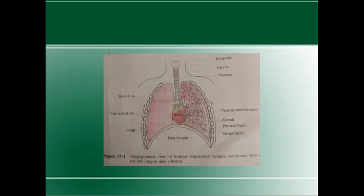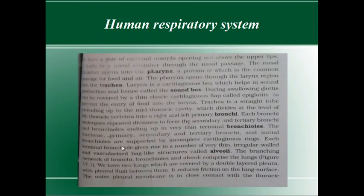The bronchi will end in bronchioles. Trachea → primary bronchi → secondary bronchi → tertiary bronchi, and after that bronchioles. The trachea, primary, secondary, and tertiary bronchi and initial bronchioles are supported by incomplete cartilaginous rings.